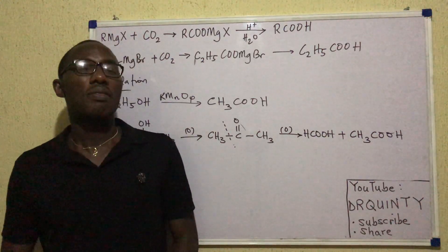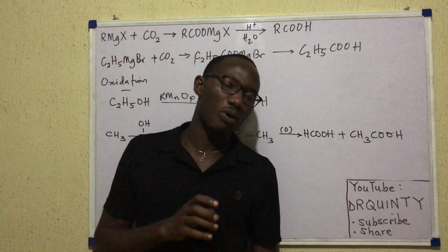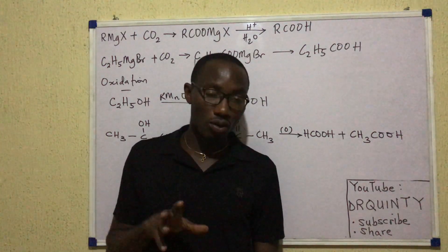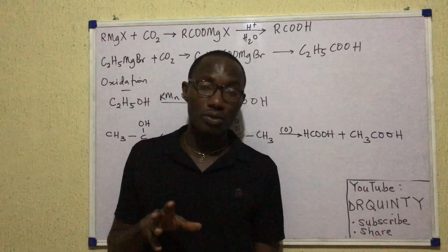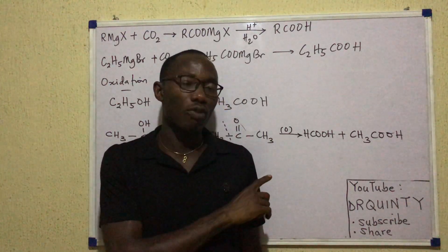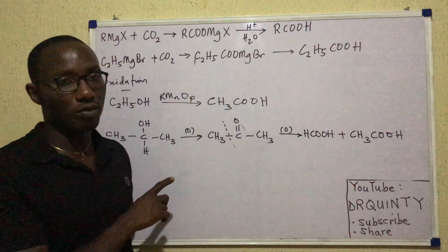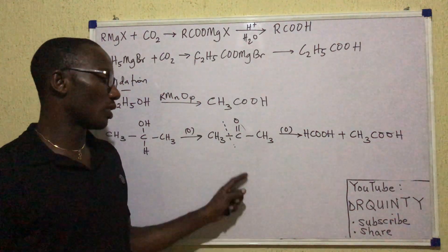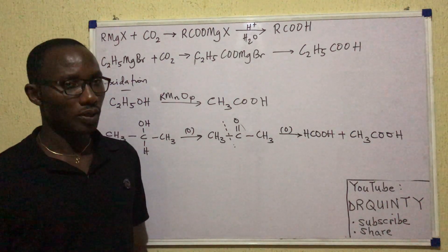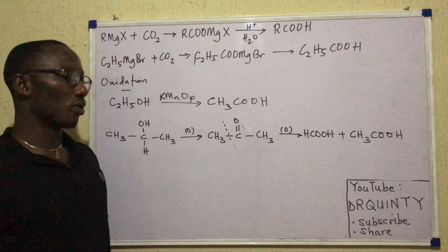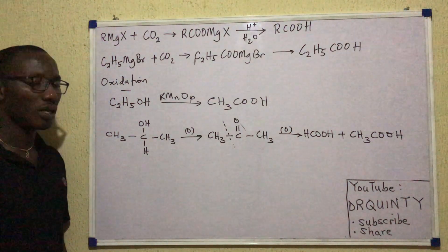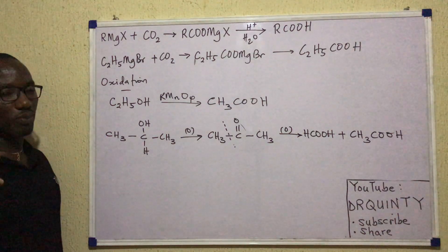Ketones (alkanones) are not acted upon by mild oxidizing agents, but with powerful or strong oxidizing agents like HNO₃ or H₂S₂O₅, you can have oxidation with rupture of carbon-to-carbon bonds, producing alkanoic acid fragments. This is oxidation producing alkanoic acids. We also have another group of compounds we can oxidize: alkyl benzenes.